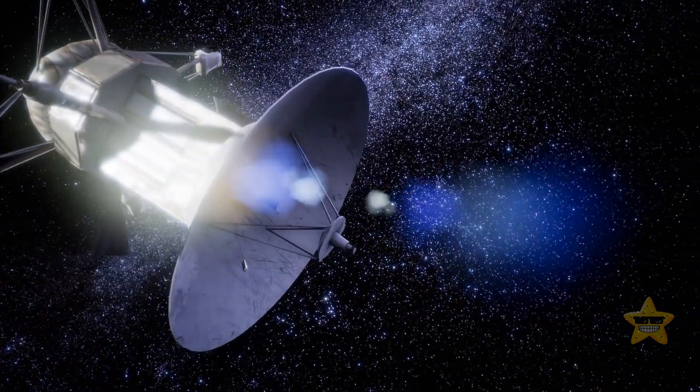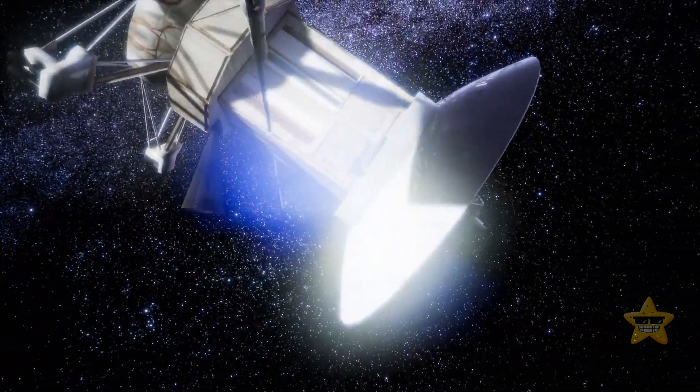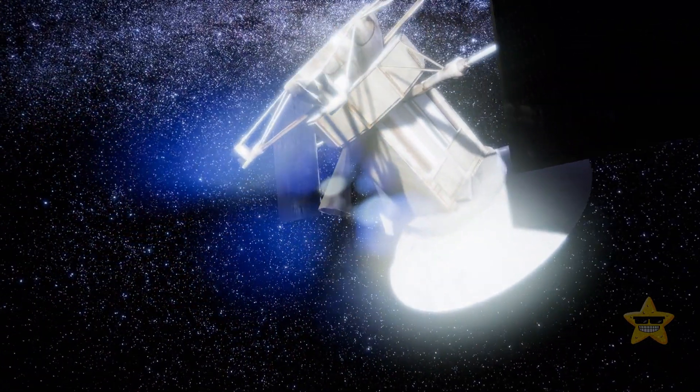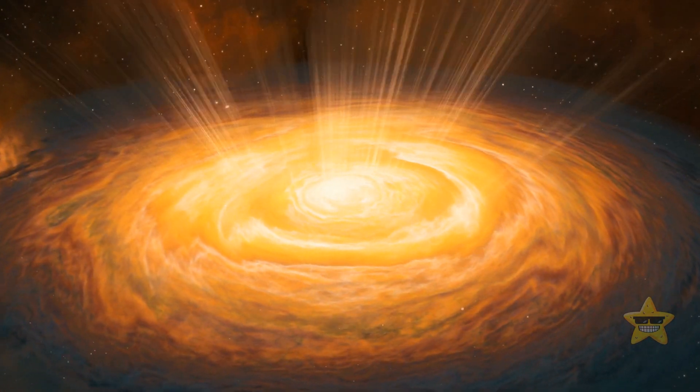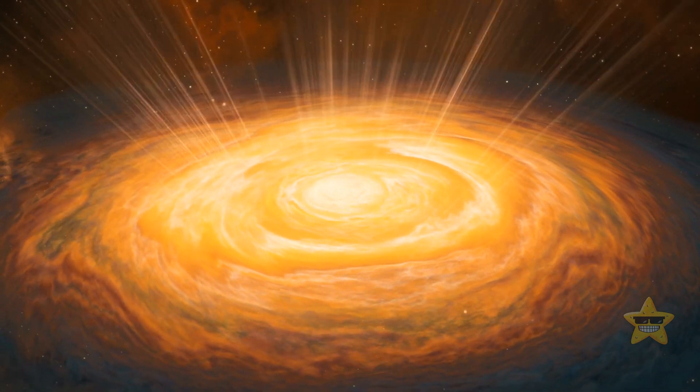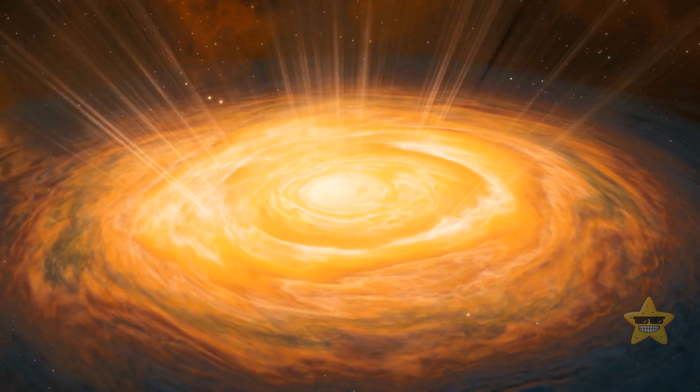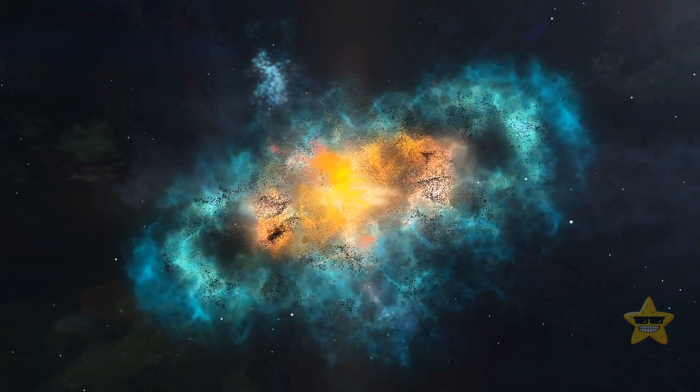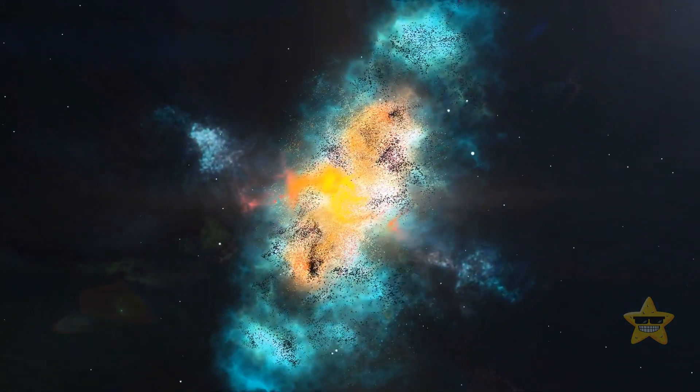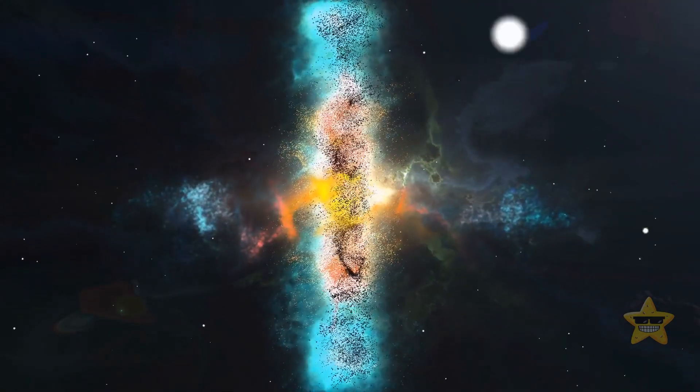Quasars can deceive you if you try to observe them through a telescope because you might think you're looking at stars. Astronomers also named them quasi-stellar radio sources because the signals were coming from one place similar to how it goes with a star. But quasars, of course, have a stronger light. They can shine much brighter than a galaxy with billions of stars.